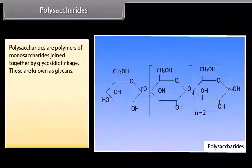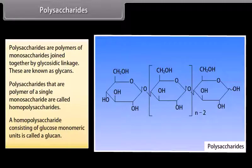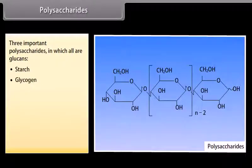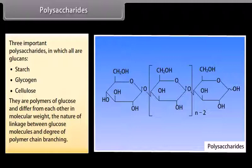Polysaccharides are polymers of monosaccharides joined together by glycosidic linkage, also known as glycans. Polysaccharides that are polymers of a single monosaccharide are called homopolysaccharides; a homopolysaccharide consisting of glucose monomeric units is called a glucan. Three important polysaccharides — starch, glycogen and cellulose — are all glucans, differing from each other in molecular weight, nature of linkage between glucose molecules, and degree of polymer chain branching.